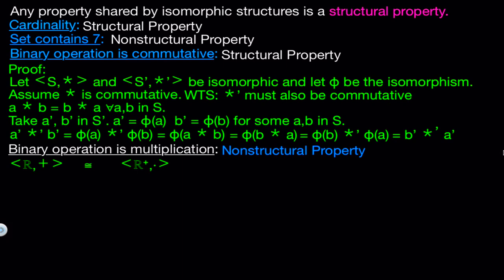We can see this by finding the isomorphism between the two structures. In order to find an isomorphism, we first need to find some function that changes addition to multiplication. Now remember that exponentiation does just that, because if we have x to the y plus z, this is the same thing as x to the y times x to the z. So let's define our function phi that maps the set of real numbers to the set of positive real numbers by phi of x equals e to the x.